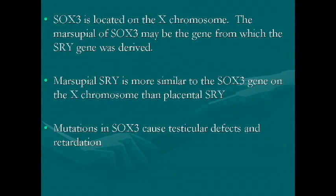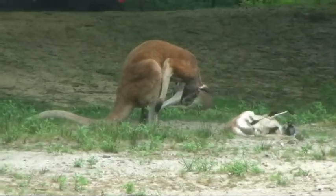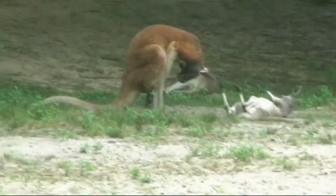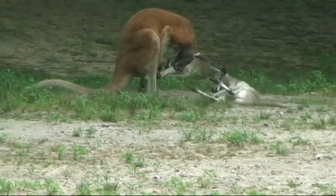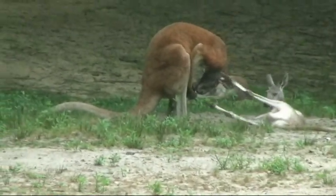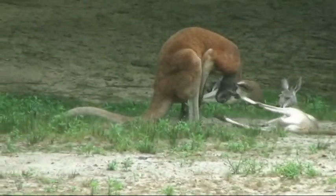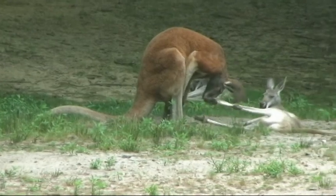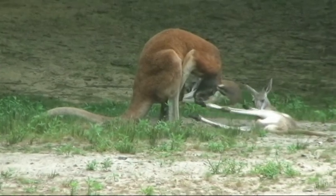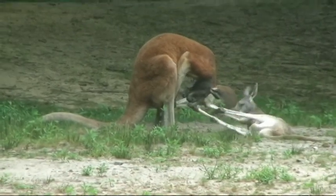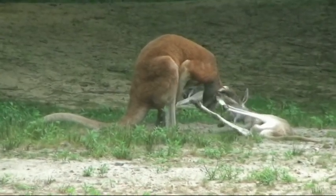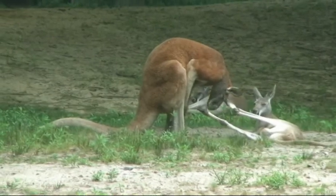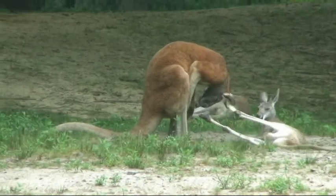SOX3 is located on the X chromosome. The marsupial version of SOX3 may be the gene from which the SRY gene was derived. Both genes lack introns. Marsupial SRY is more similar to the SOX3 gene on the X chromosome than to the SRY of placental mammals.